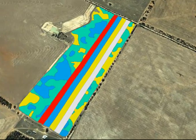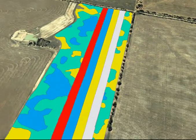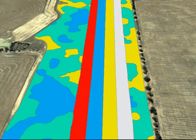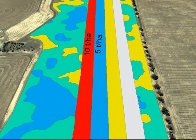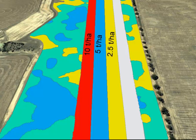You can see there are four trial rates: 10 tonne to the hectare, 5 tonne to the hectare, 2.5 tonne to the hectare, and 0 tonne to the hectare of gypsum application.